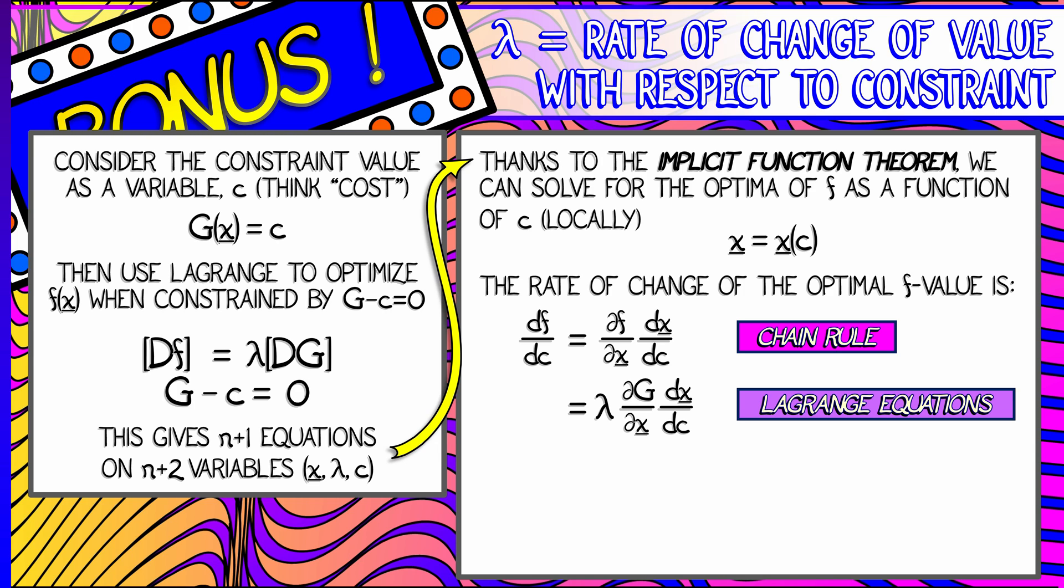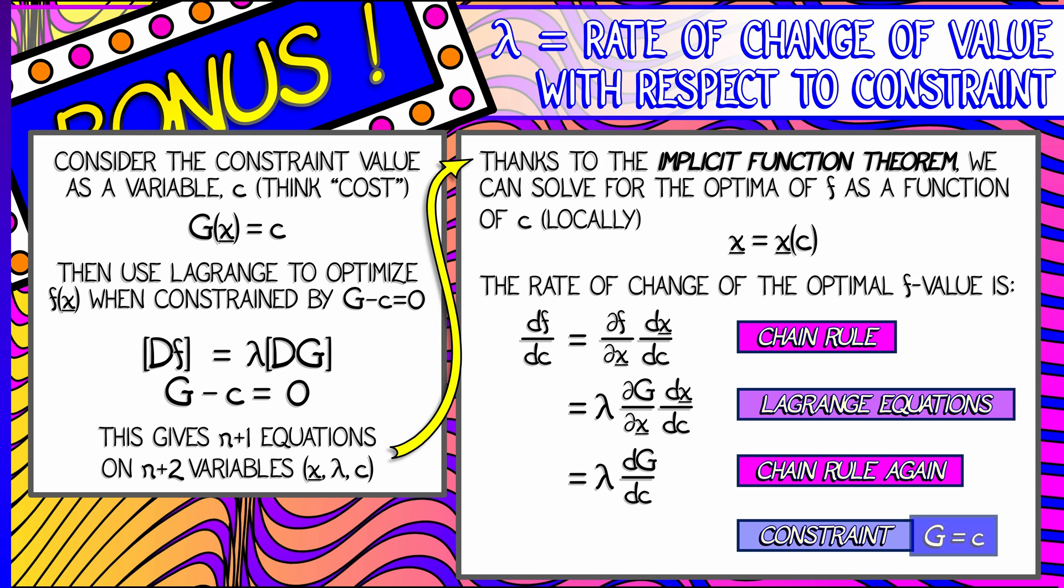It's as if we're canceling out those dx's. Not really. But use the chain rule, and you get that df/dc is really lambda times dg/dc. And now comes the magic, because you're on a constrained curve where g is equal to c.